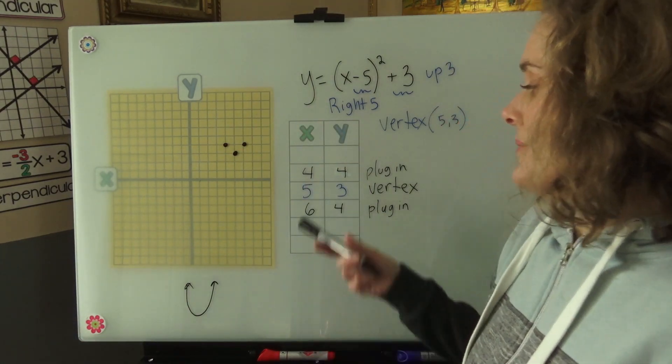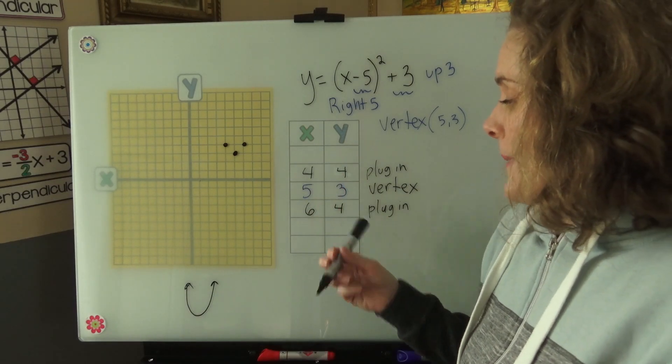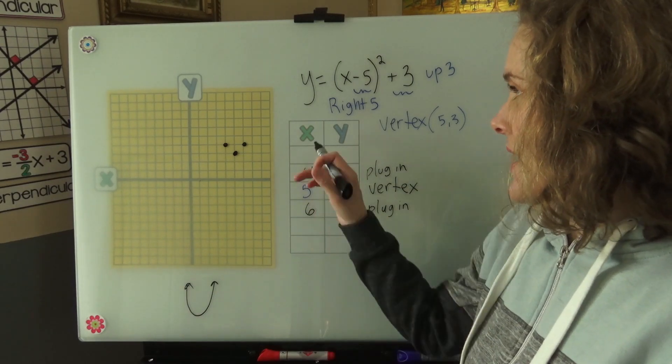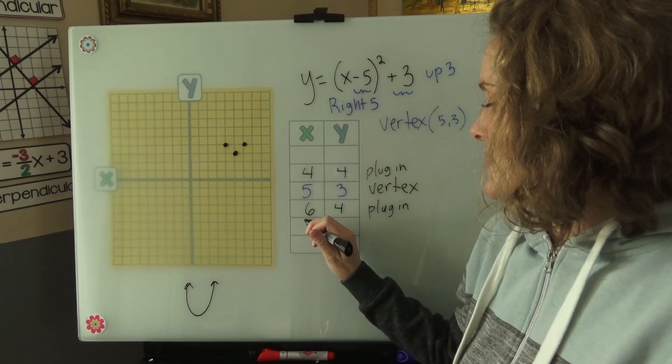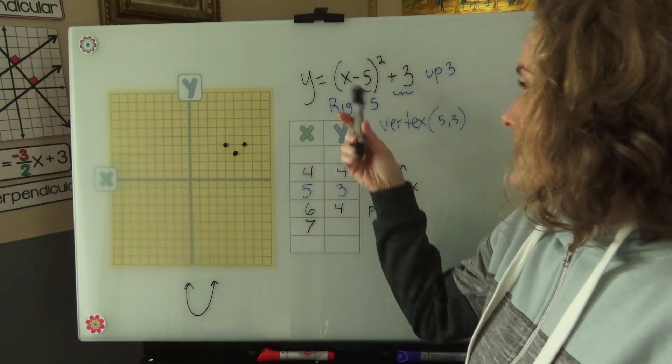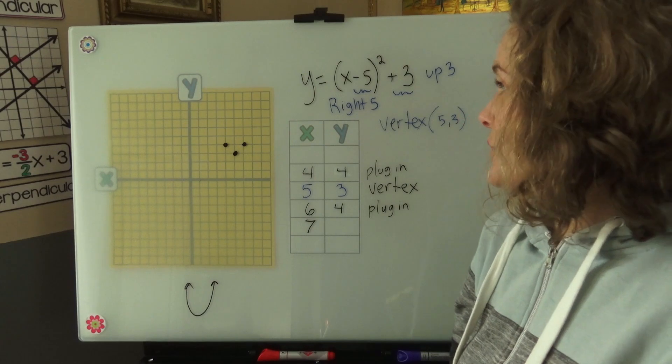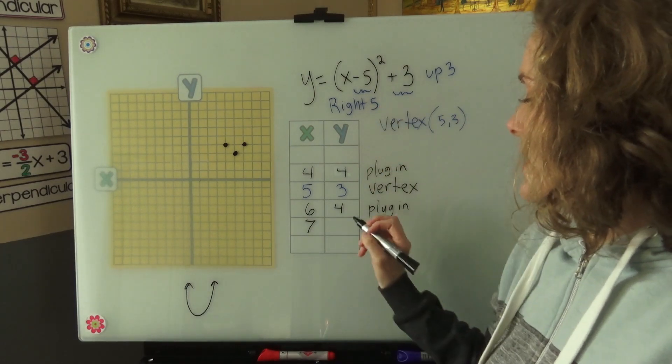Let's do one more. Now I'm going to choose one number bigger than 6 so that I don't have to deal with negative numbers. So I'm going to choose 7. 7 minus 5 is 2. 2 squared is 4. 4 plus 3 is 7.